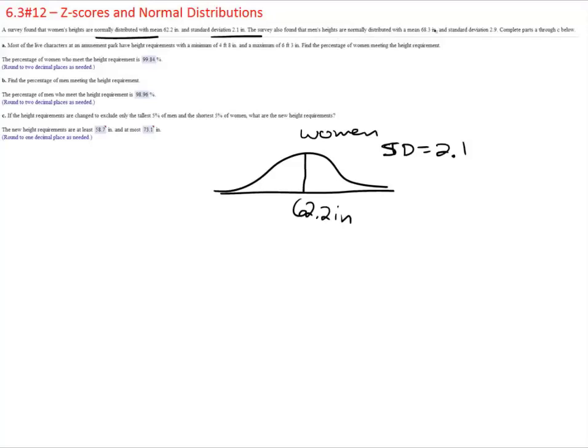Then they also found that men have another similar distribution with a mean of 68.3 and a standard deviation of 2.9, and this is men.